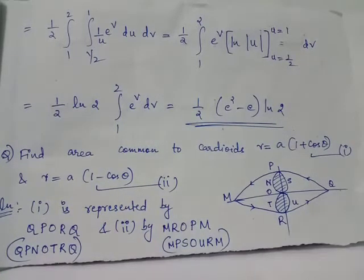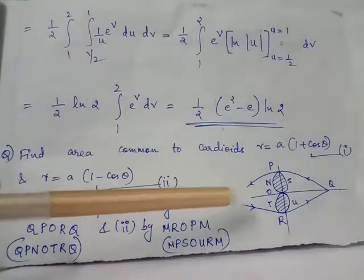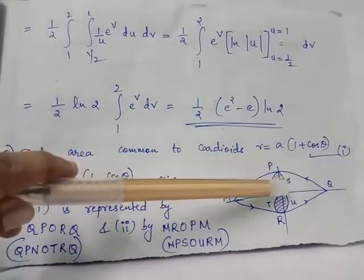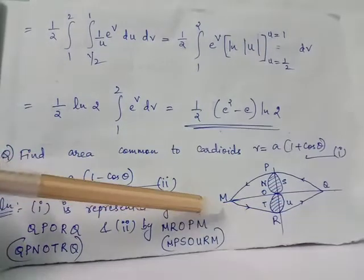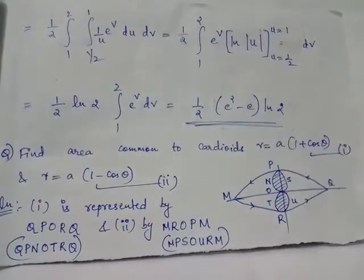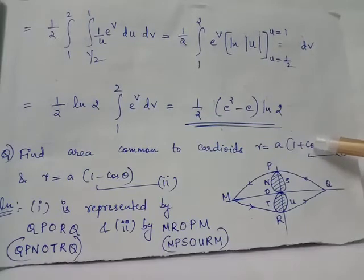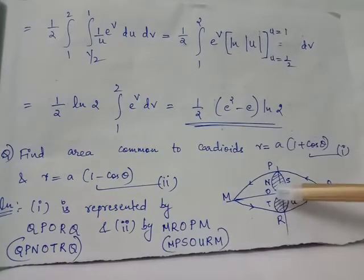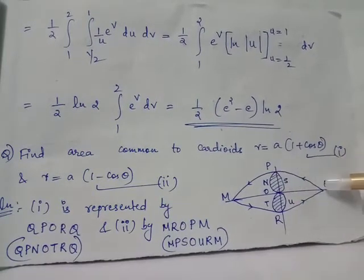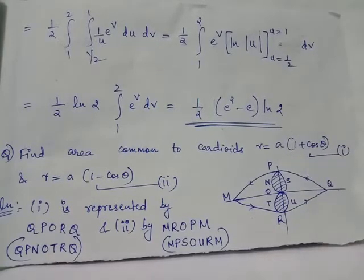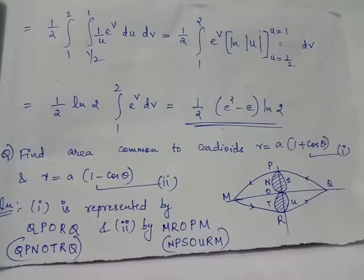We have the cardioid R equals A into 1 minus cos theta given by the heart shape MPSOURM, and the cardioid R equals A into 1 plus cos theta is given by the heart shape RTONPQR. Since we are asked to find the area common to both cardioids, the shaded region represents that common area.